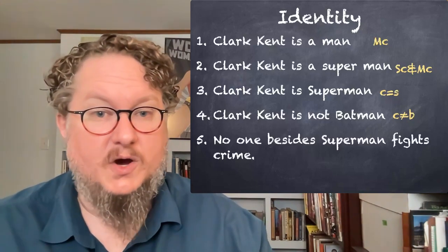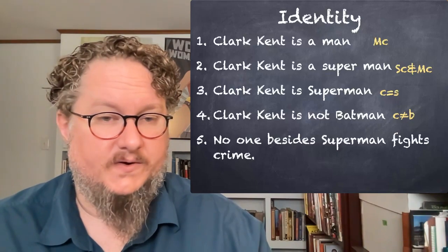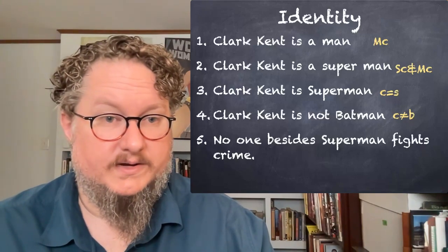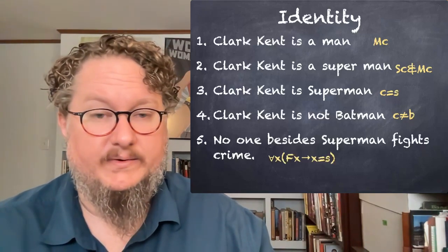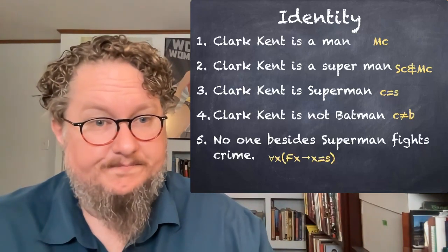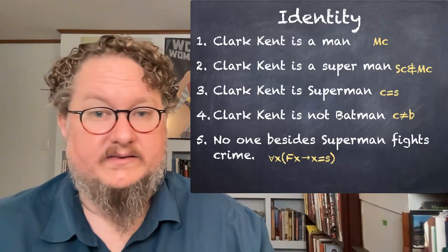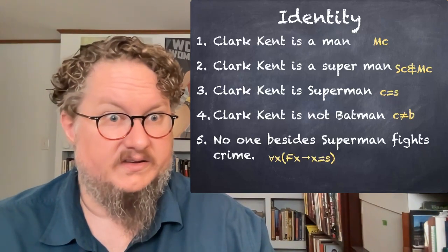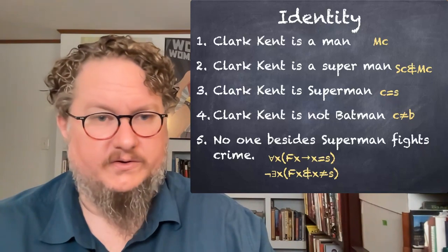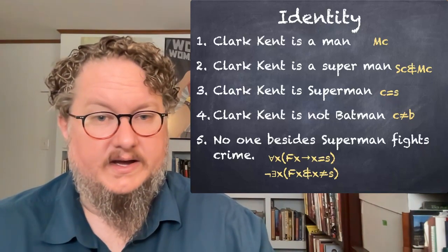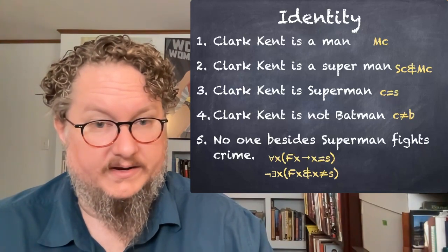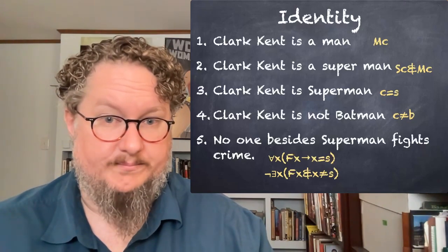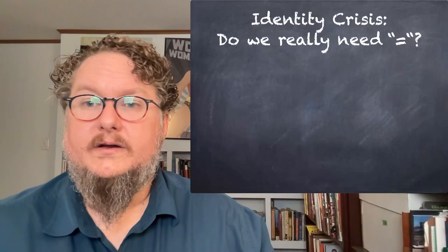If we wanted to say something like 'no one besides Superman fights crime,' because Superman is a proper name, that would be difficult to do without the identity predicate. We'd say: for all X, if X fights crime — capital F meaning fights crime — then X is Superman, using the identity predicate. That says anyone who fights crime is Superman. We could also use the equivalent: it is not the case that there exists someone X such that X fights crime and X is not Superman.